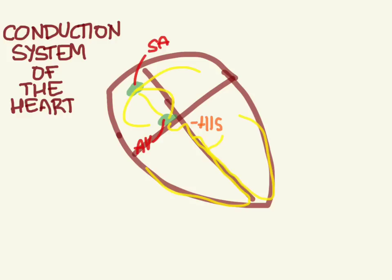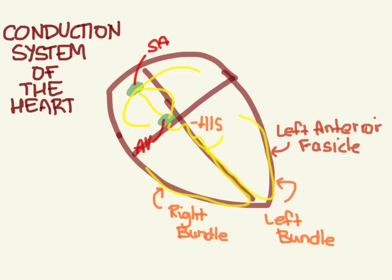You've got the bundle of His, the right bundle, and the left bundle. This one here is called the Bachman's bundle, but don't worry about that. We're not going to look at that. The left bundle is actually broken down into two. There's the left anterior fascicle, and obviously then the left posterior over here.